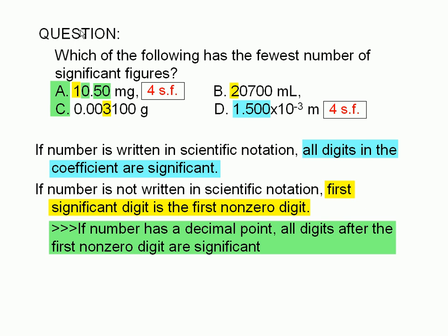In choice C, the numbers 1, 0, and 0 are significant also. So choice C has four significant figures.